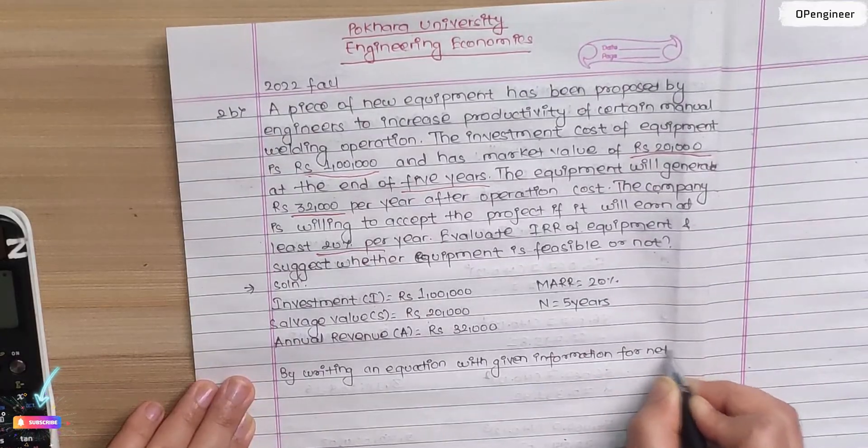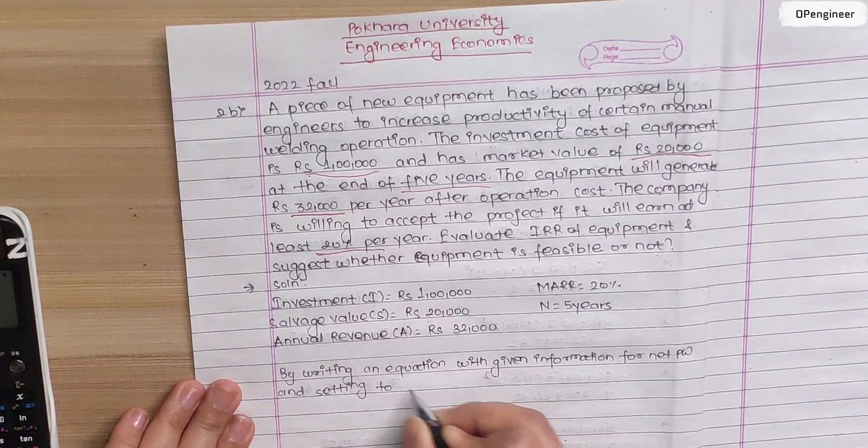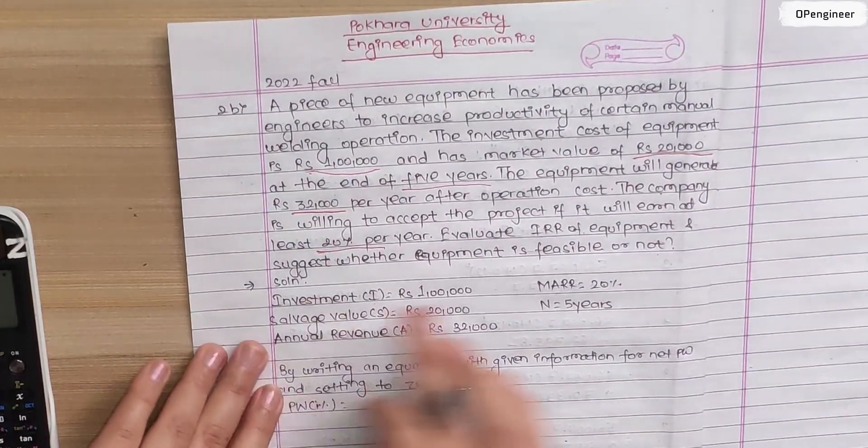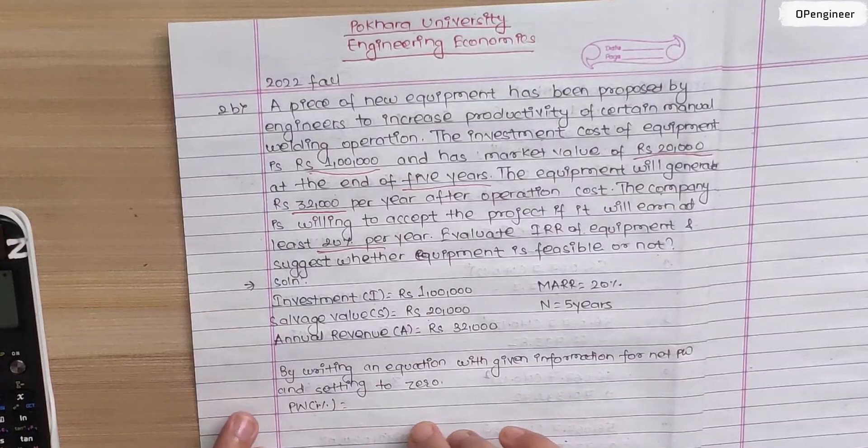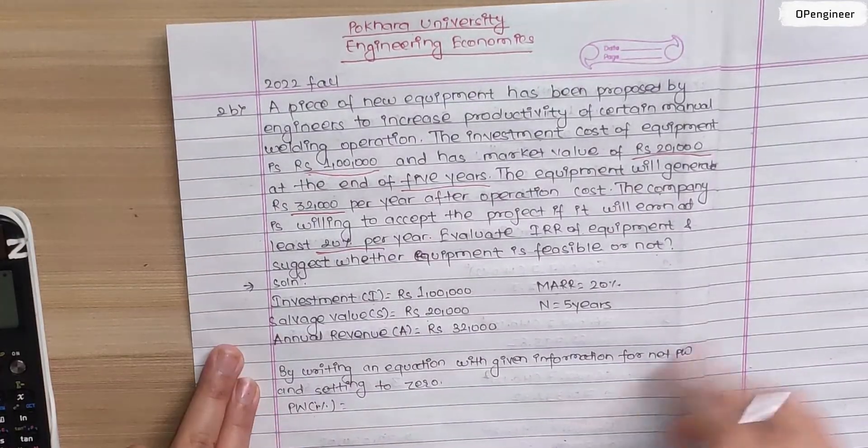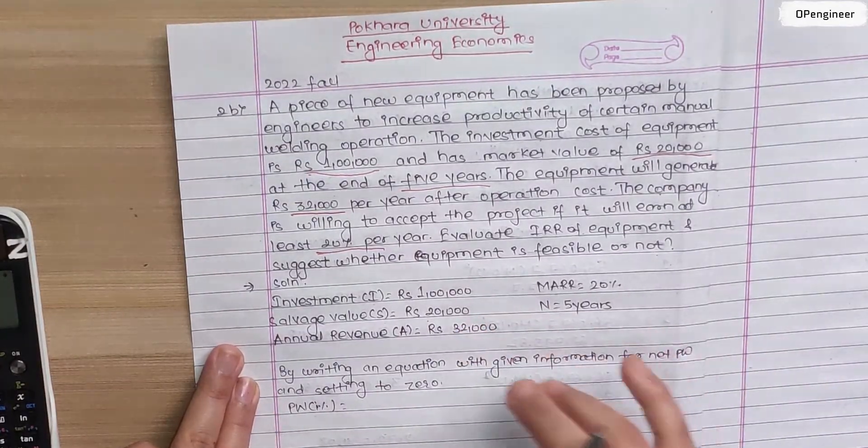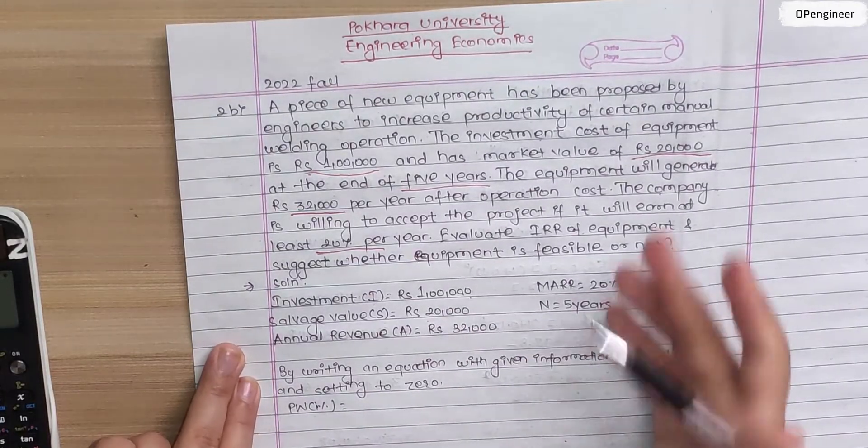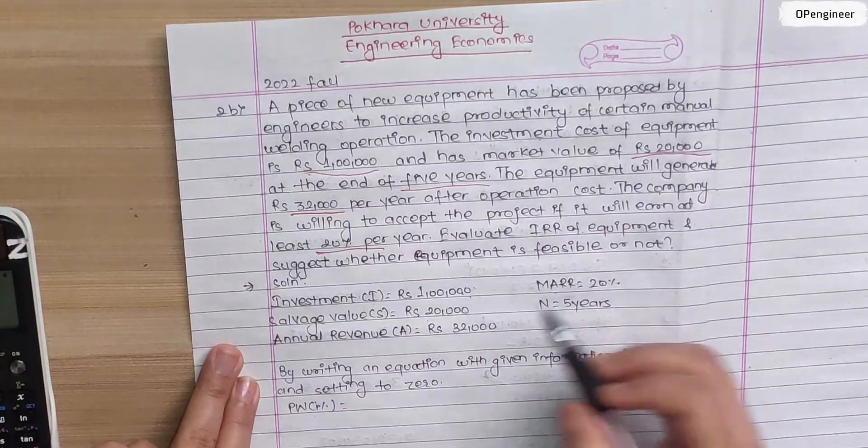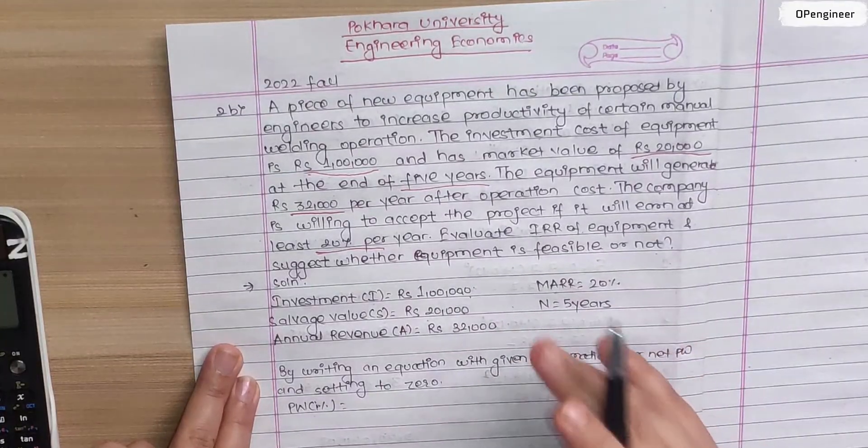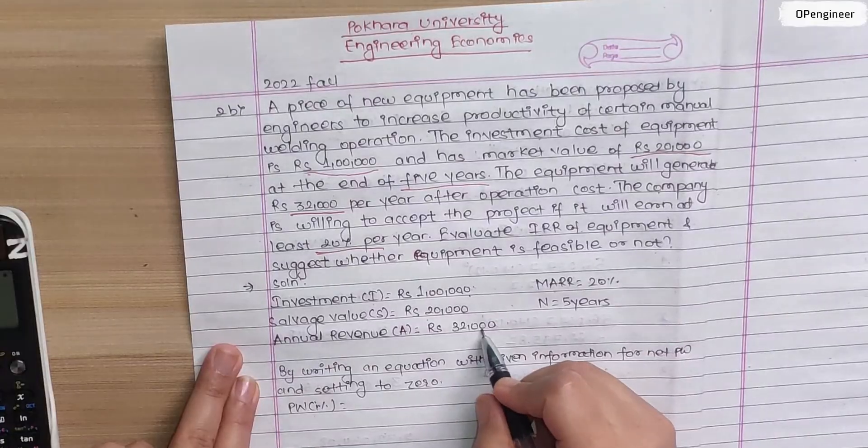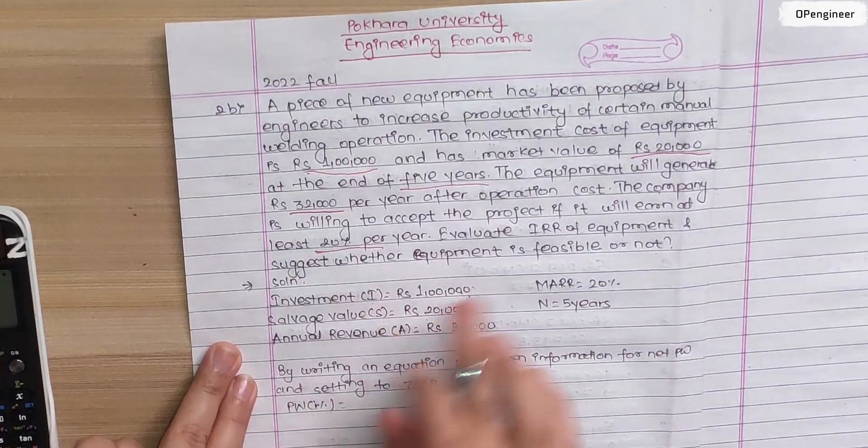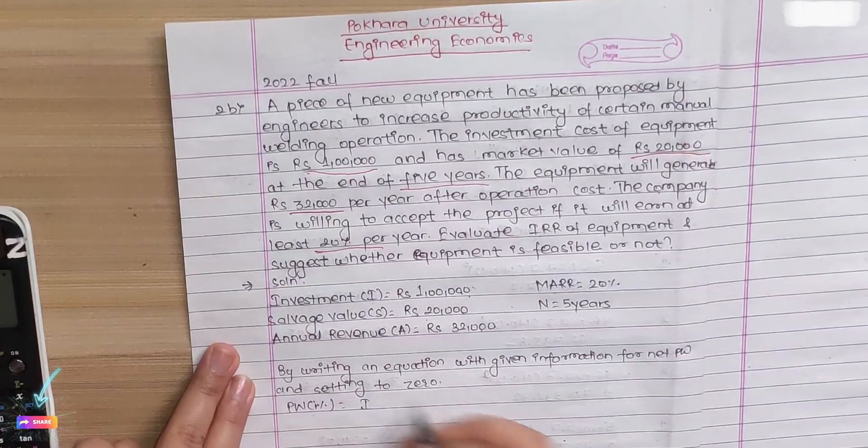By writing an equation with given information for net present worth and setting to zero. For present worth calculation, we need to convert everything to present value. Investment is already present amount, salvage value is future amount to convert to present, and annual revenue needs to be converted to present worth.